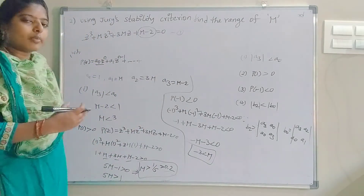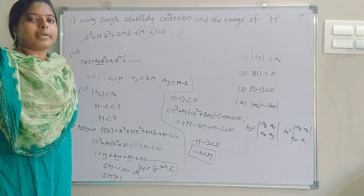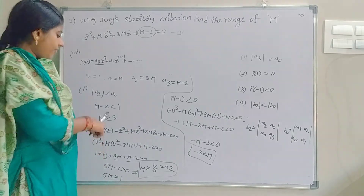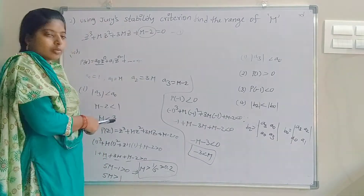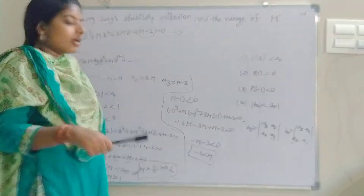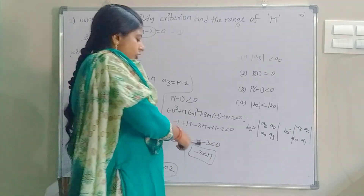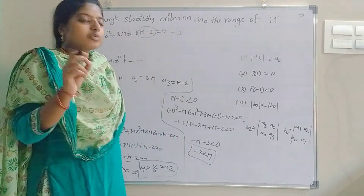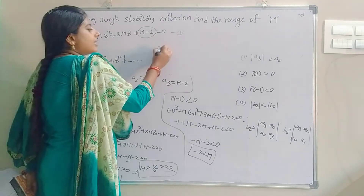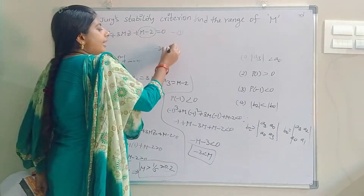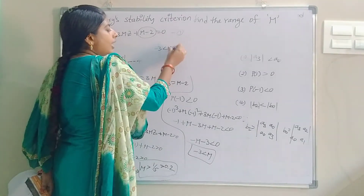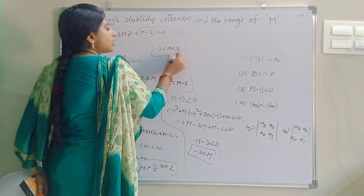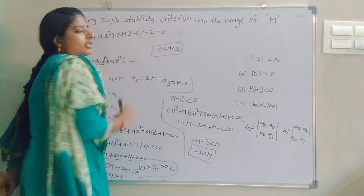From condition 1, the upper bound is m ≤ 3, and from condition 3, the lower bound gives m ≥ −3. So the M range is −3 ≤ m ≤ 3.